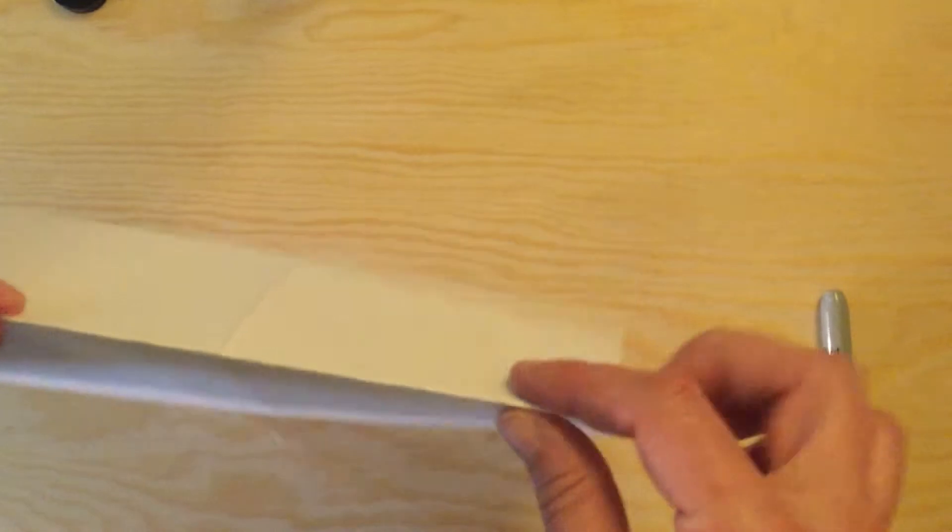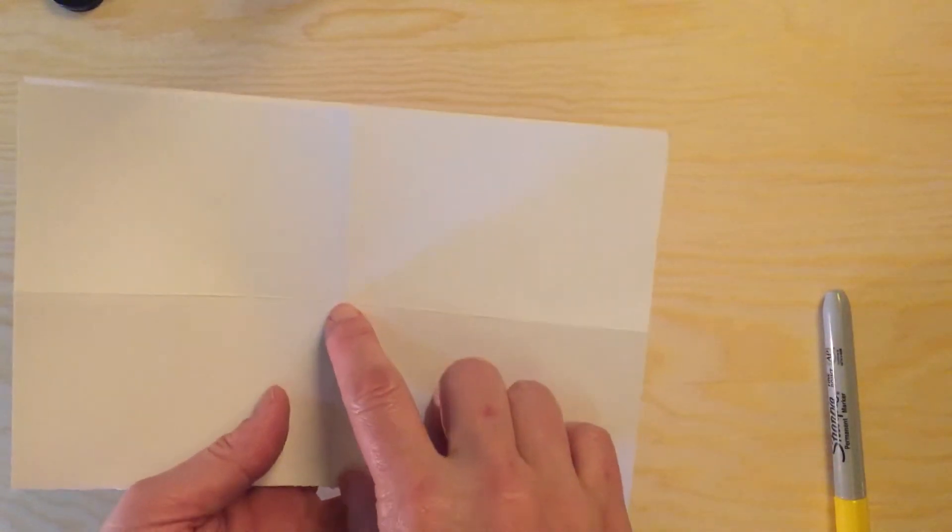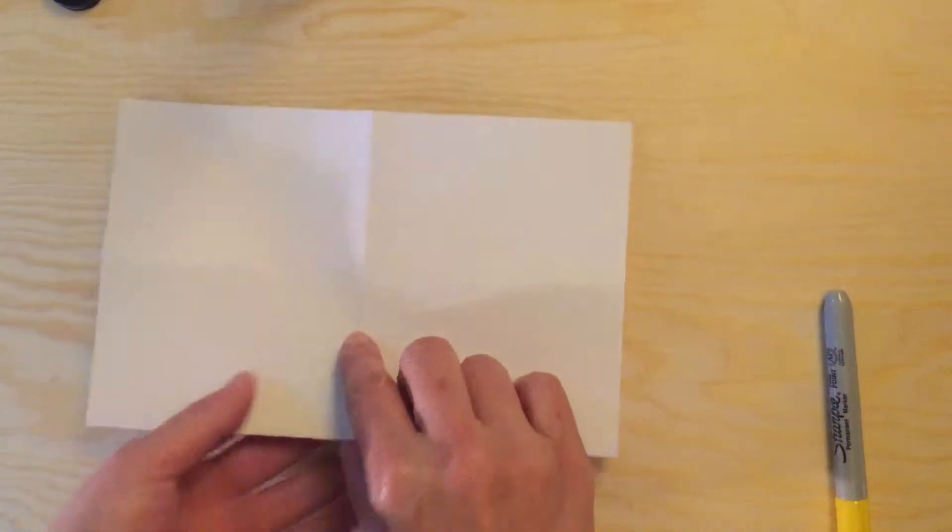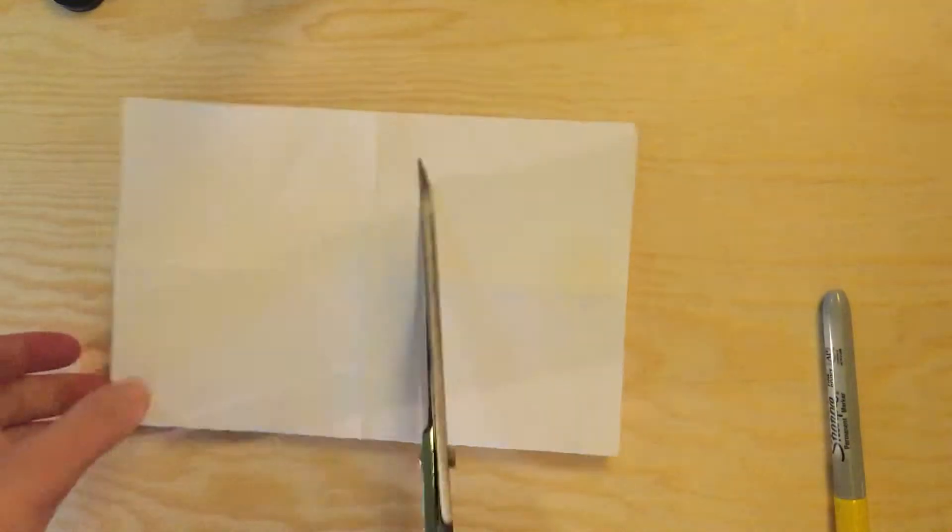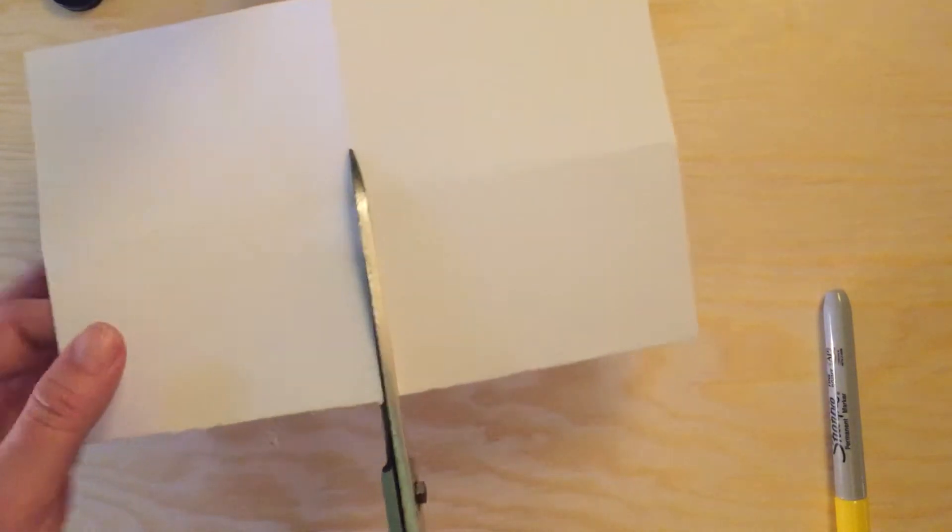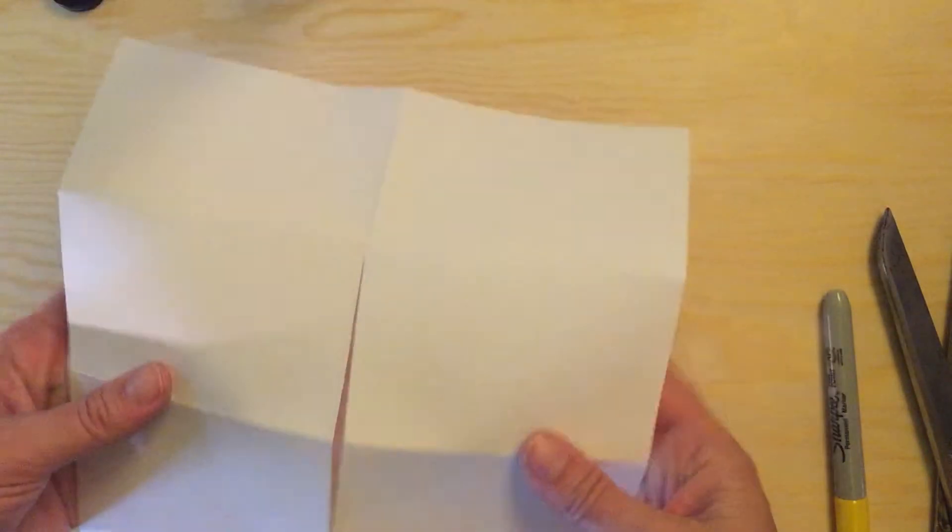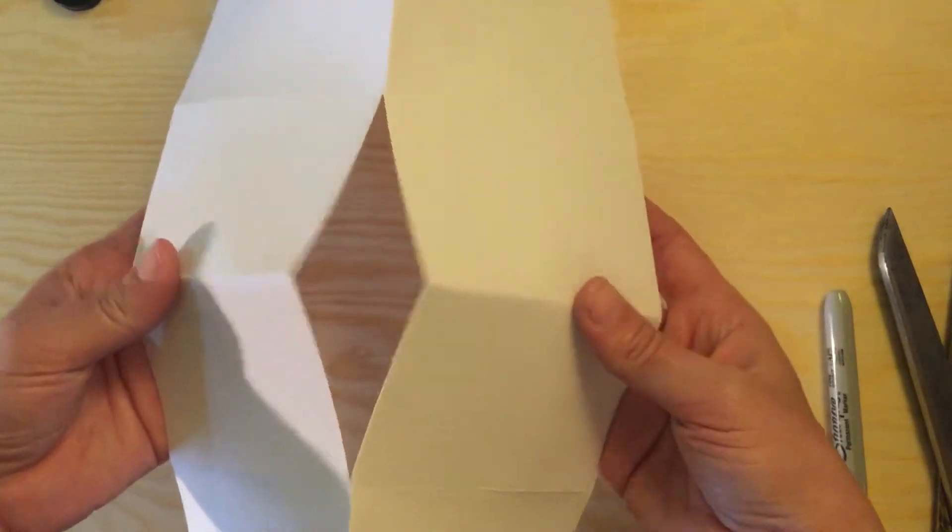Now here we're going to cut from the middle of the fold to the second line here to the middle of the line. The goal is to make a hole in the middle of your paper so you cut from the fold to the middle and then you should have a hole in the center.